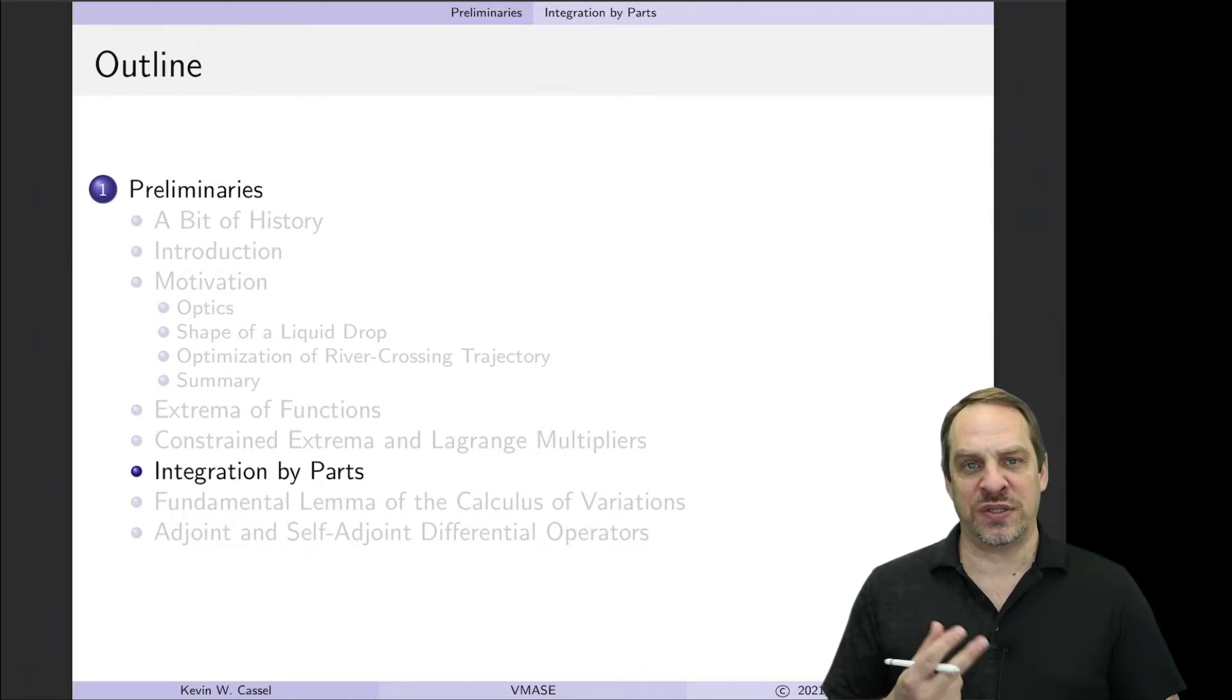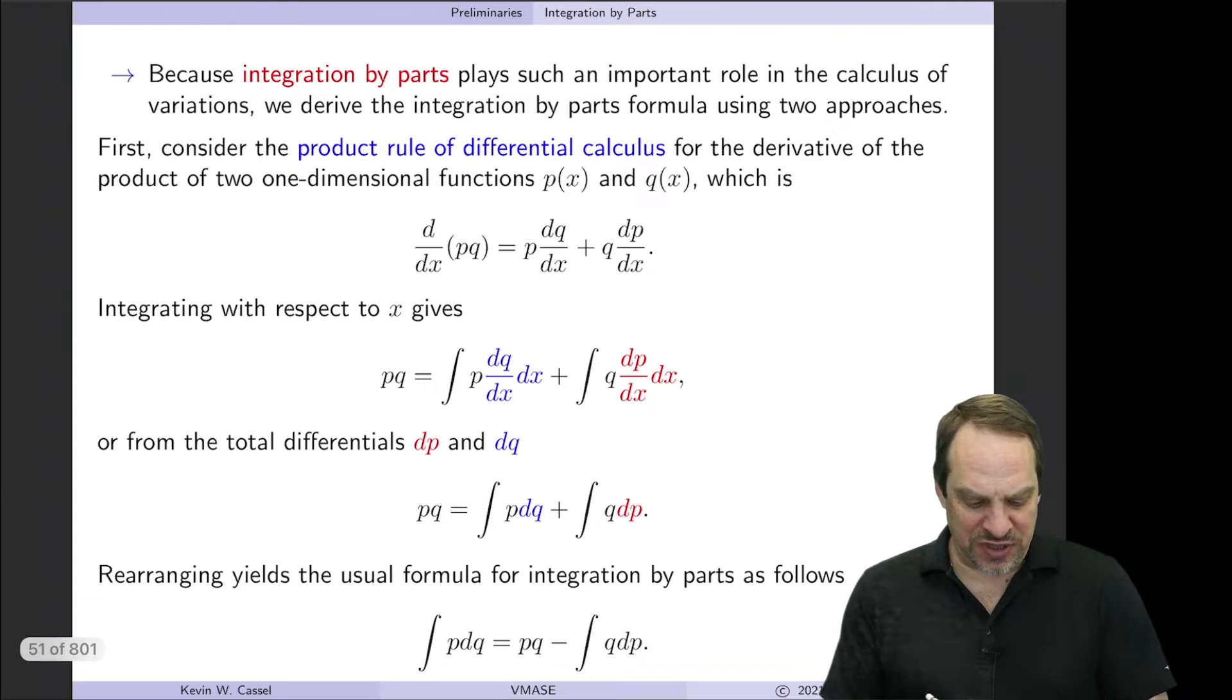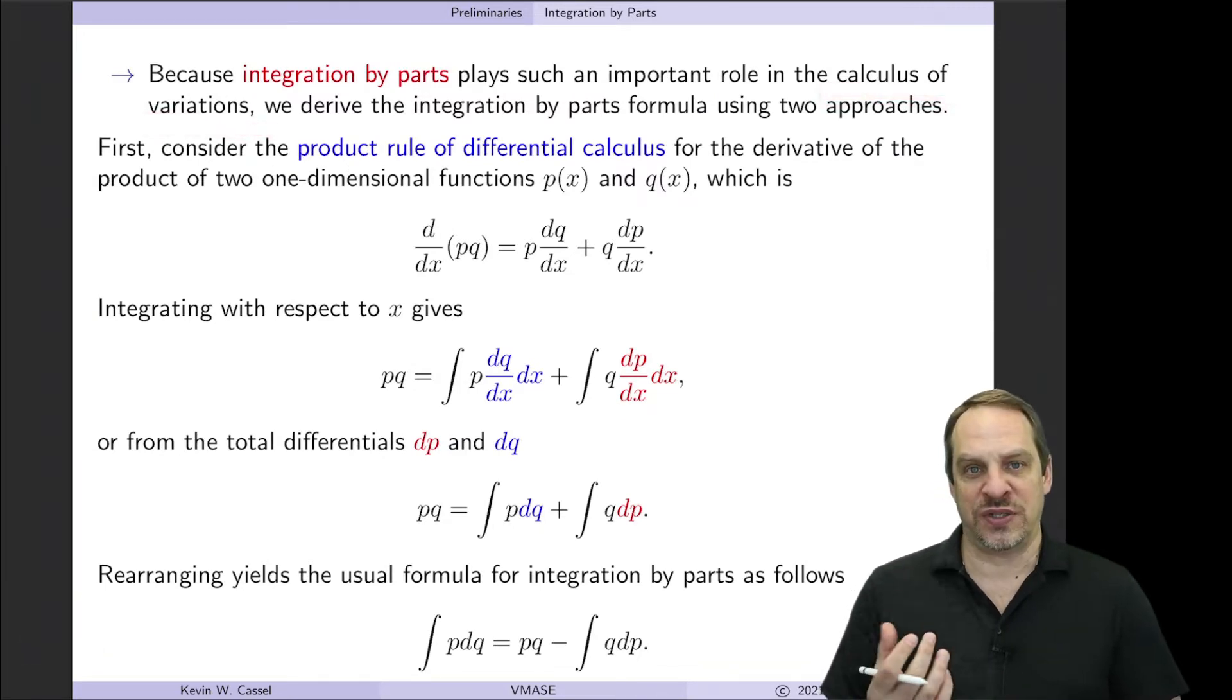I'm actually going to derive it two different ways, and the reason is because it plays a very important role in the calculus of variations. We're going to use this quite extensively. One is in the 1D context, the way we normally learn it and use it. And then we're going to derive it using the 2D form of integration by parts, which is the divergence theorem, and show that the 1D version of the divergence theorem actually gives us the same integration by parts formula.